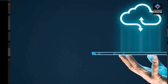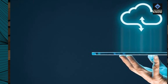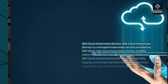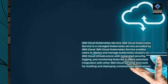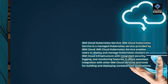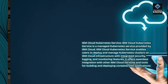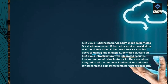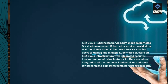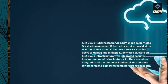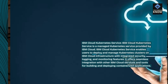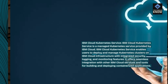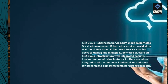IBM Cloud Kubernetes Service. IBM Cloud Kubernetes Service is a managed Kubernetes service provided by IBM Cloud. It enables users to deploy and manage Kubernetes clusters on IBM Cloud infrastructure with integrated security, logging, and monitoring features, and offers seamless integration with other IBM Cloud services and tools for building and deploying containerized applications.